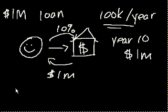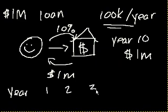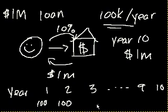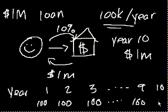So if we think about it from year 1, 2, 3, 9, 10. In year 1, I pay $100,000. Year 2, I pay $100,000. Year 3, I pay $100,000. Year 9, I pay $100,000. And then year 10, I pay the $100,000 plus I pay back the million dollars, so I pay back $1.1 million.